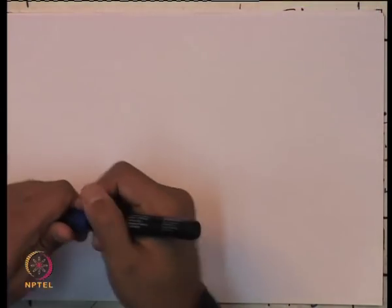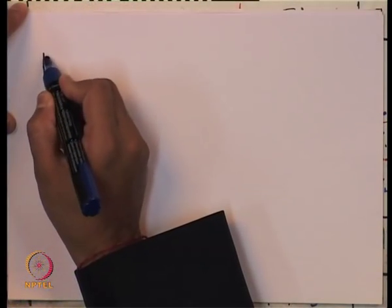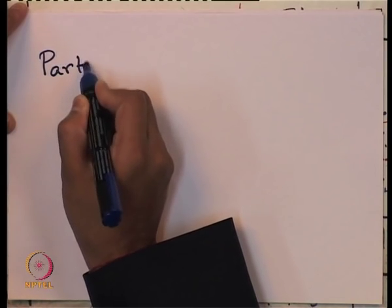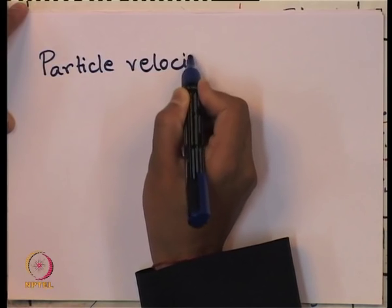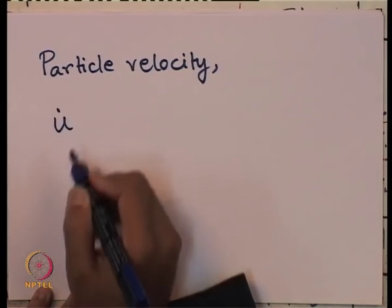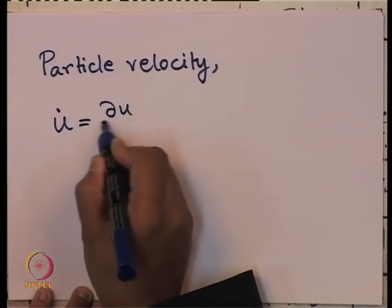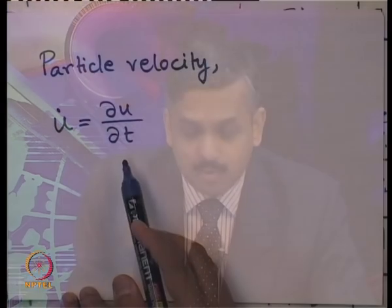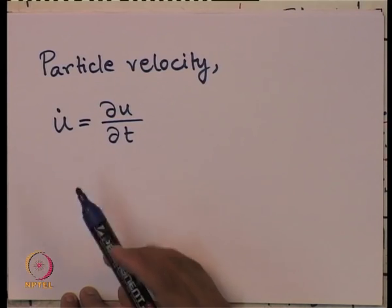Now, let us start today's lecture with the derivation of particle velocity, because when the particle is moving, we are interested to know how much particle velocity will occur. Particle velocity, let us say u-dot, is nothing but ∂u/∂t. For one-dimensional wave propagation it equals du/dt, but when we discuss three-dimensional or generalized cases later, we will need to differentiate in the corresponding direction. That is why it is better to always write it in the form of partial differential rather than full differential.